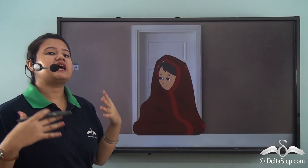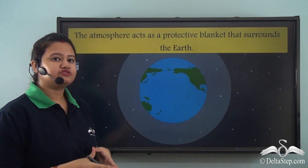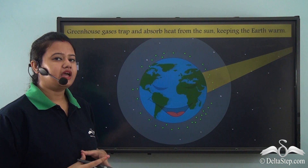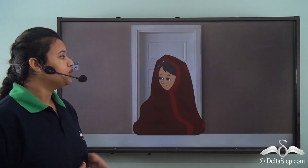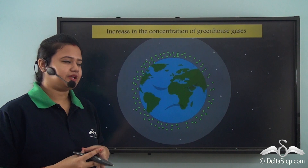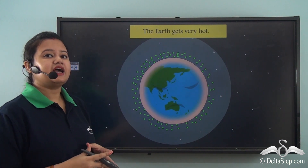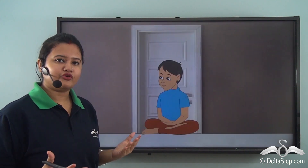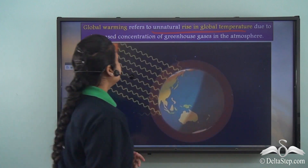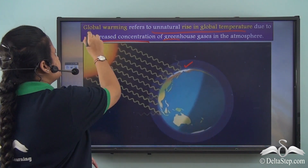We know atmosphere is an important blanket of air surrounding our Earth, and within this atmosphere different greenhouse gases like CO2 are present that help to keep the Earth warm. Now imagine if someone wraps you with more and more blankets — you will feel warm and sweaty, not comfortable. Similarly, if the percentage of greenhouse gases increases in the atmosphere, then our Earth will become warmer than before. This unnatural rise in global temperature due to increased concentration of greenhouse gases in the atmosphere is known as global warming.